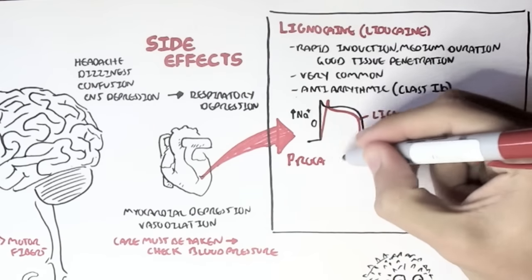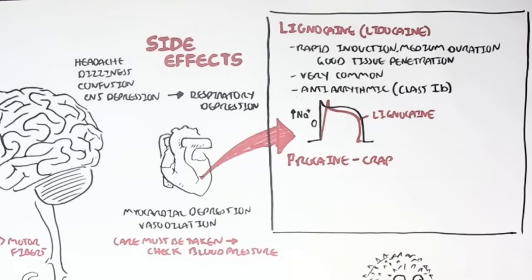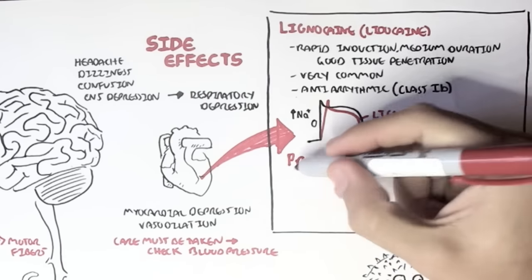Another type of local anesthetic is procaine, which is, I wrote here, crap, because it has many side effects and it's not very useful.